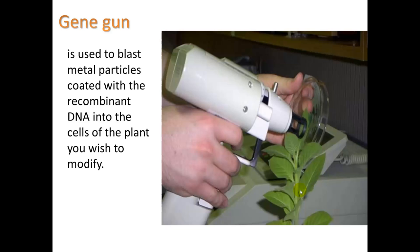How they do that is with the gene gun. It's used to blast metal particles coated with the recombinant DNA into the cells of the plant you wish to modify. You just hope that some of those cells are able to incorporate those metal particles and the DNA without the cells being too badly damaged and dying.